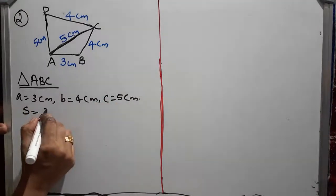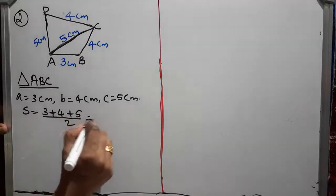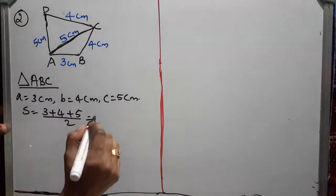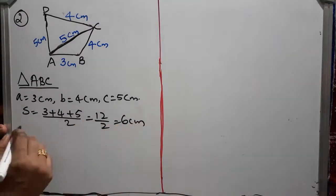What is S? S equal to 3 plus 4 plus 5 by 2 which is equal to 12 by 2 which is equal to 6 cm. Then area.